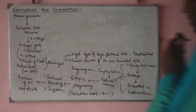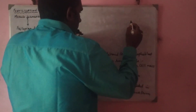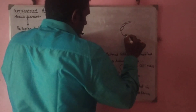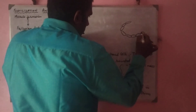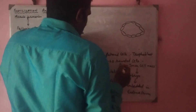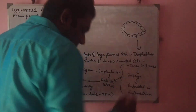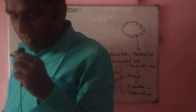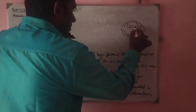The trophoblast is the outermost region and it consists of large flattened cells. Inside the large flattened cells you will find small cells which are called the inner cell mass.